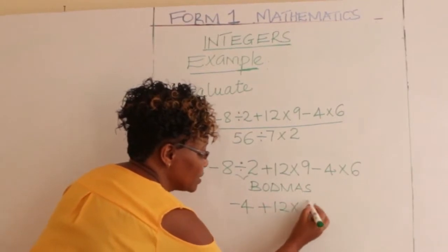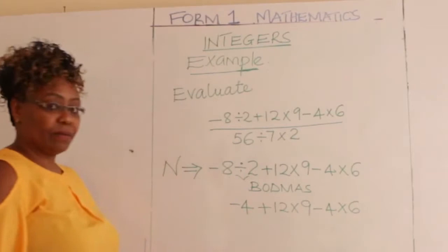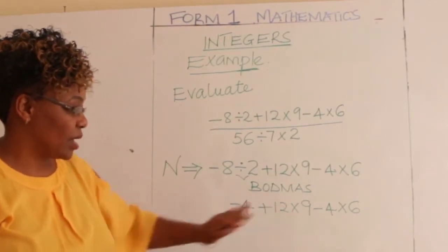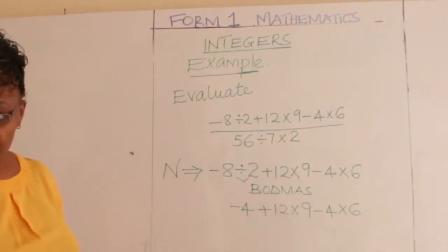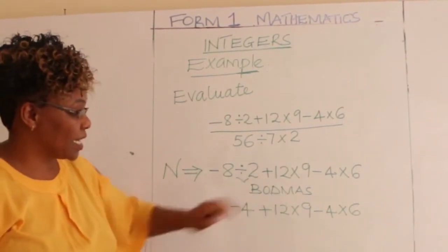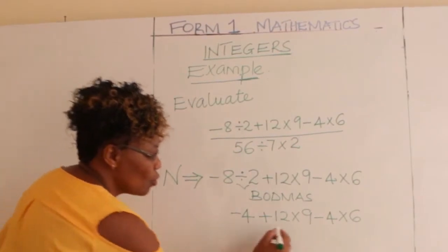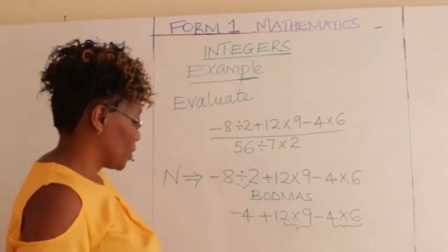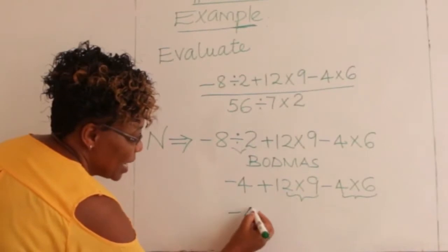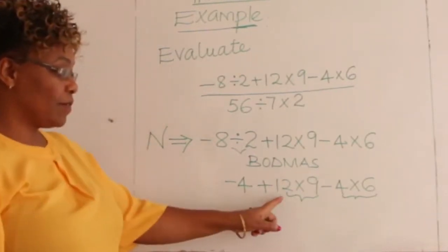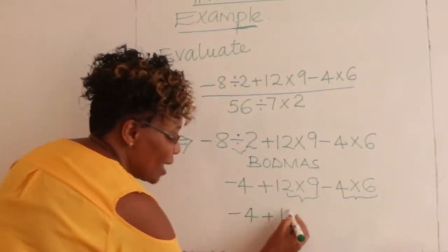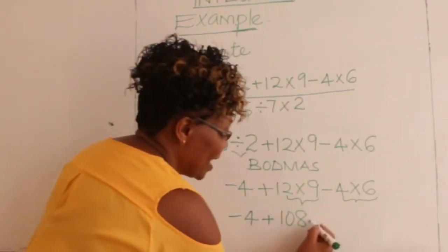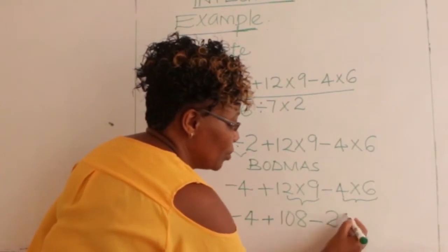So we have minus 4, plus 12 times 9, minus 4 times 6. Looking at it again, we have addition, multiplication, and subtraction. We go to multiplication next. So we multiply: 12 times 9 gives you 108, and minus 4 times 6 gives you 24.